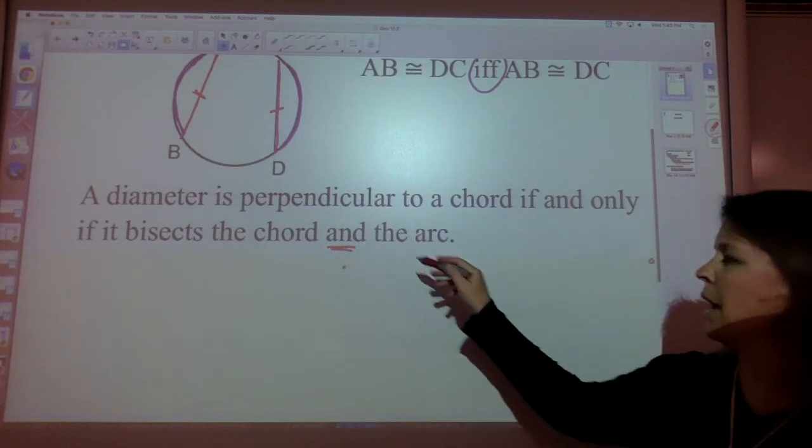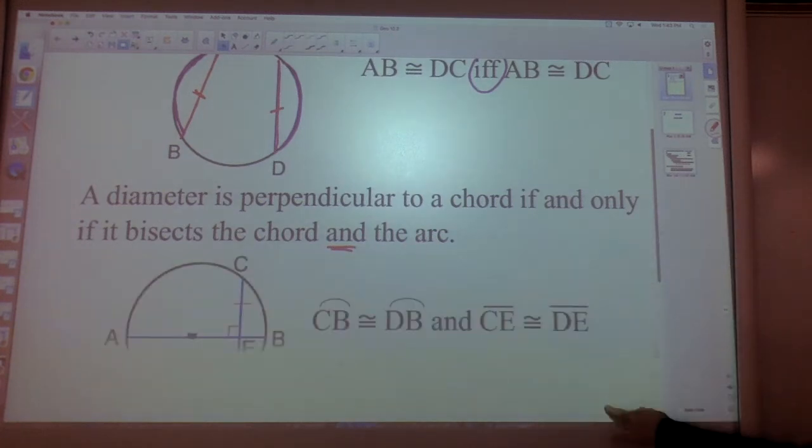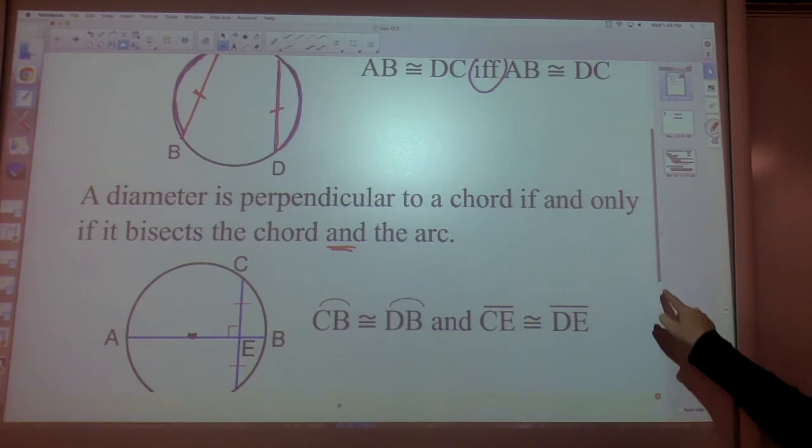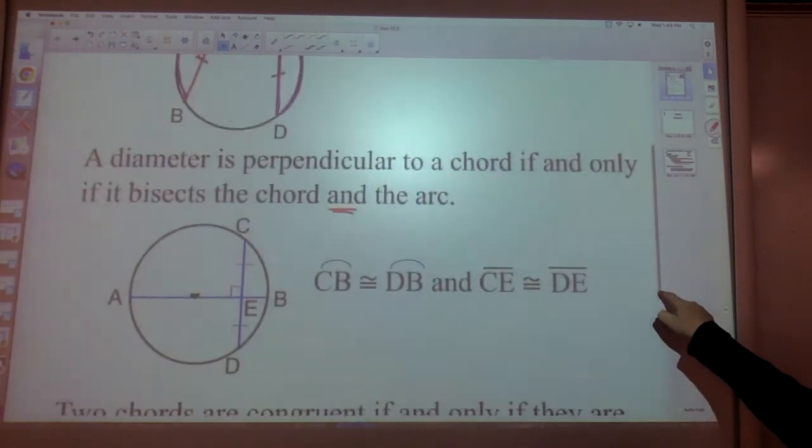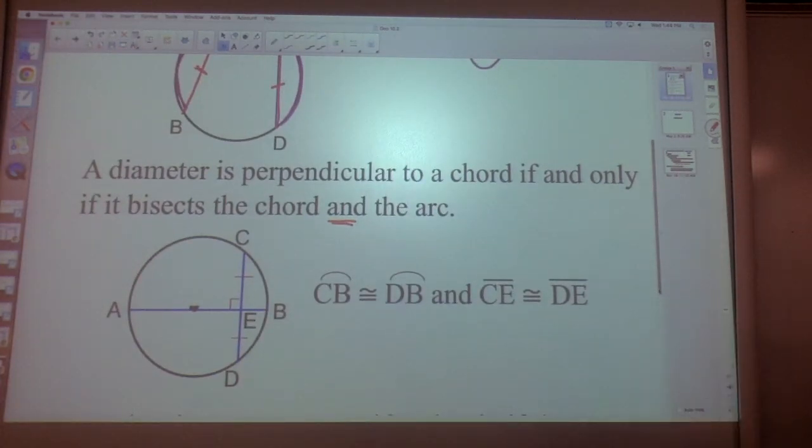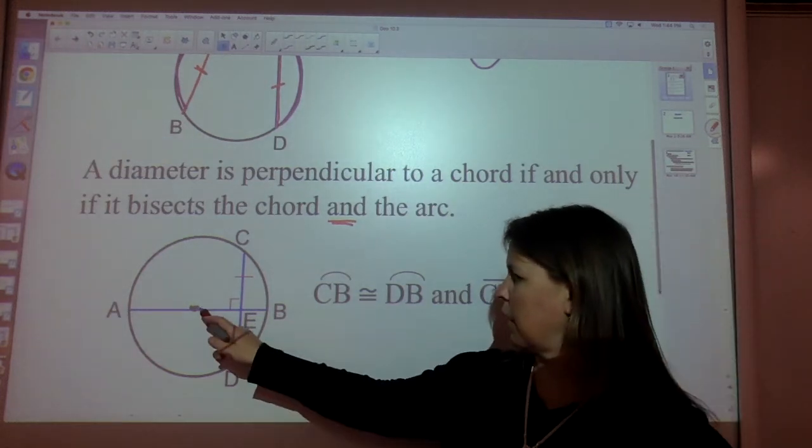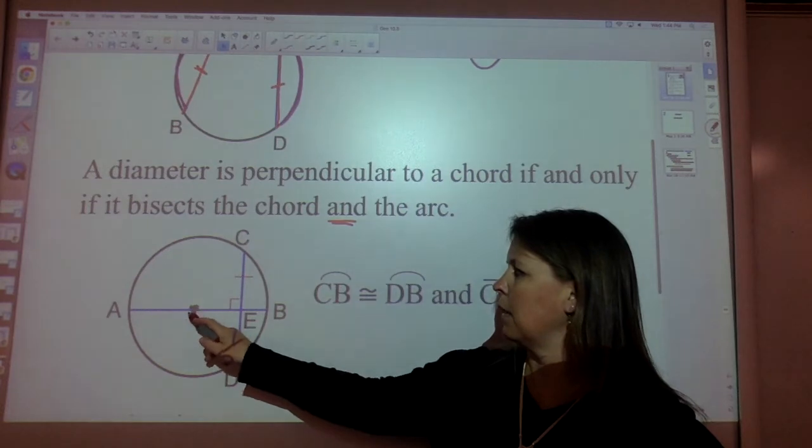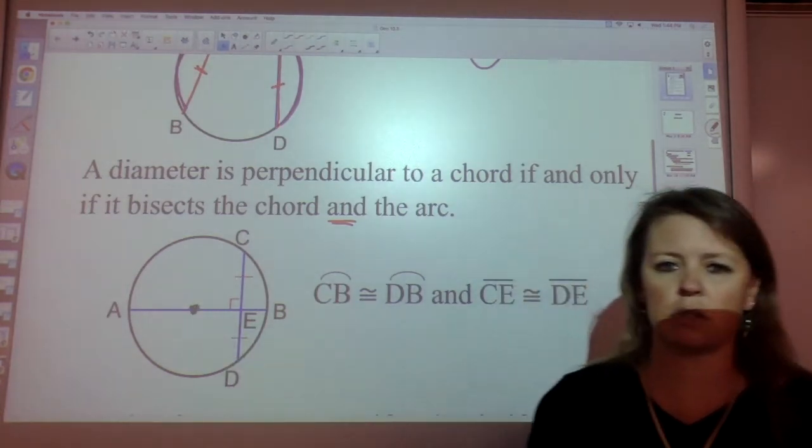If the diameter bisects the chord and the arc, it's perpendicular. Take a look at this drawing. Picture paints a thousand words. You've got this drawing. You have a circle. You know that it's a diameter. You can see there that I threw a center in there. It's only a diameter if it goes through the center. If it doesn't, it's just a chord.